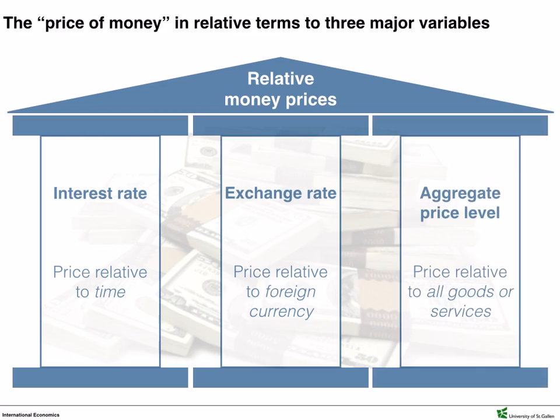The aggregate price level reflects the average price level of all goods or services in money terms in a period. Under healthy macroeconomic conditions, prices for individual goods and services constantly change following supply and demand. However, during deflation, the aggregate price level is decreasing — some prices fall faster than others and the value of money increases. During inflation, the aggregate price level is increasing and the value of money decreases. Importantly, inflation must be considered when talking about nominal and real GDP growth.